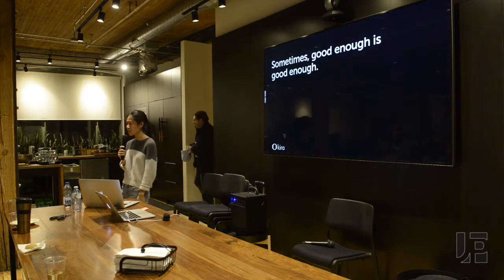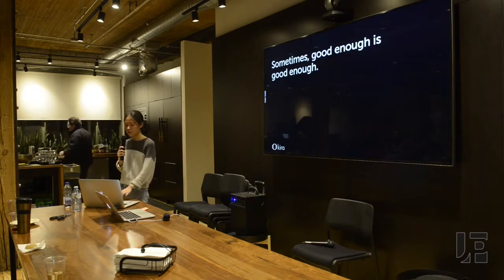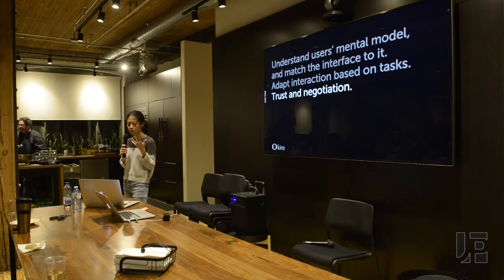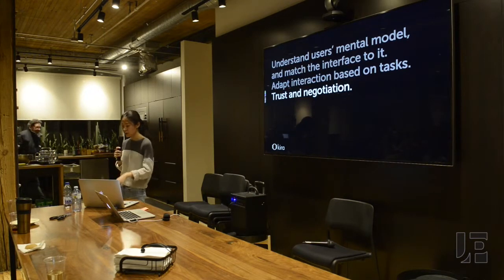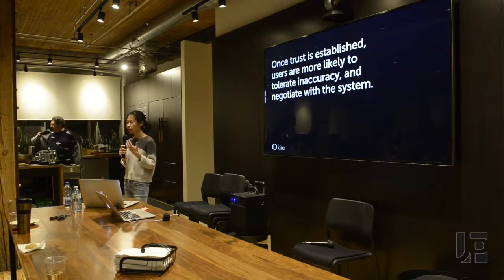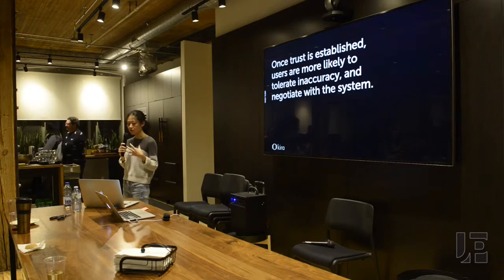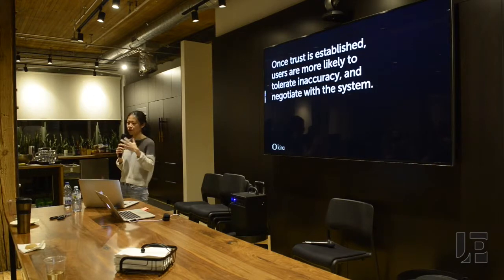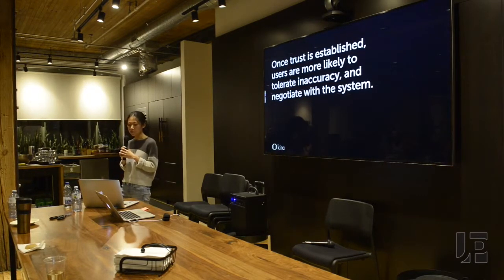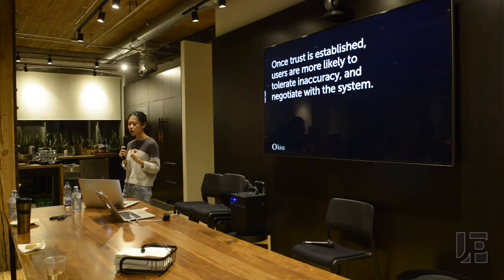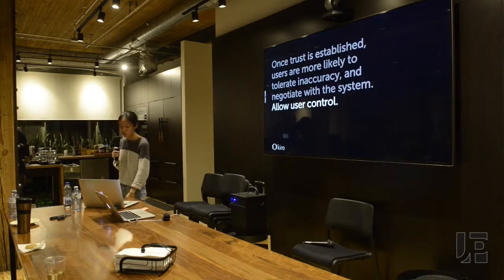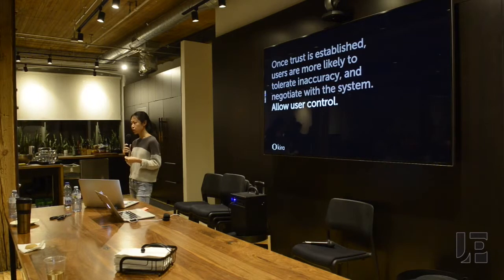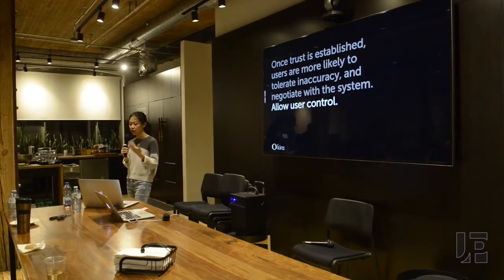What we learned here is that sometimes good enough is good enough. That leads to the last point: trust and negotiation. Once trust is established, users are actually more likely to tolerate inaccuracy and more likely to negotiate with the system — even though intuitively you'd think accuracy is the most important thing and inaccuracy would cause them to abandon it. The key is: once you give people something they can interpret and understand, and trust is built, they can tolerate a little inaccuracy and spend some time negotiating, changing things. The design implication is that allowing user control is really, really important — give them a way to negotiate with the system.